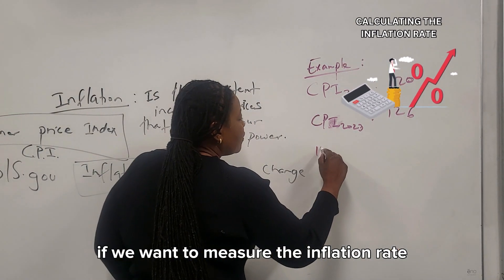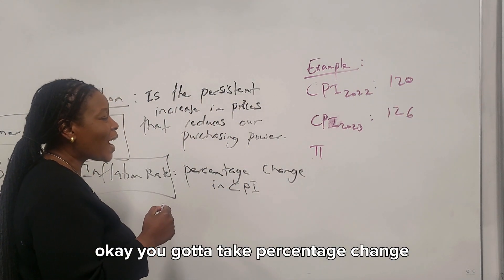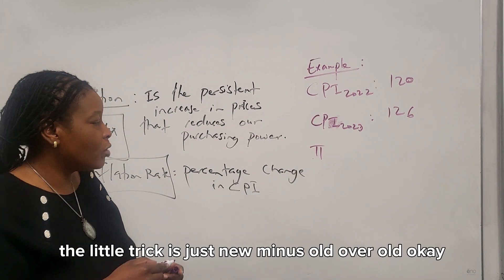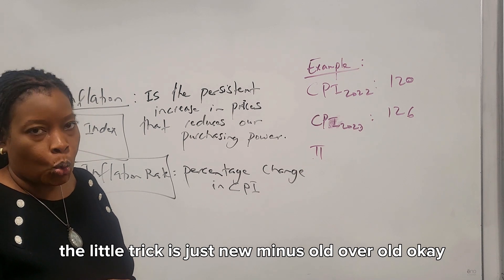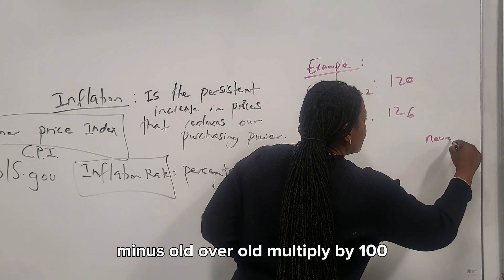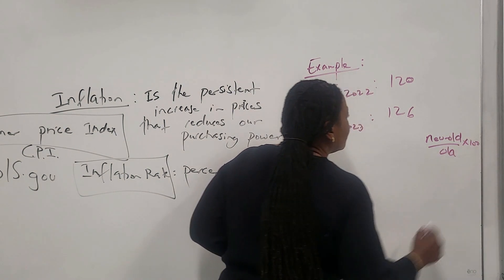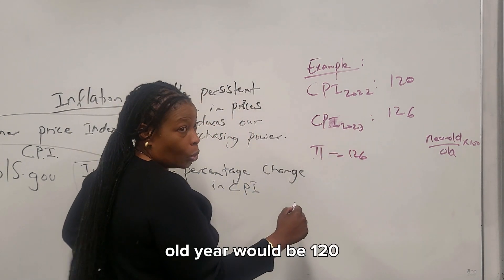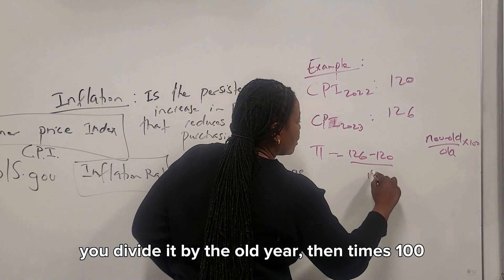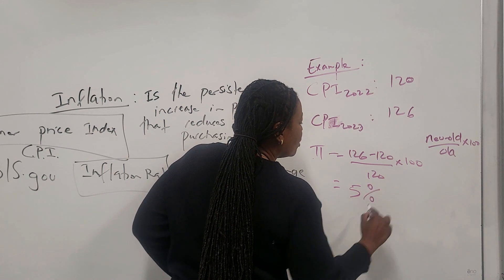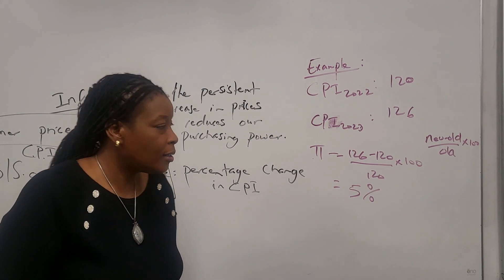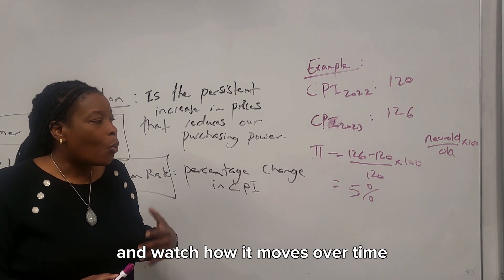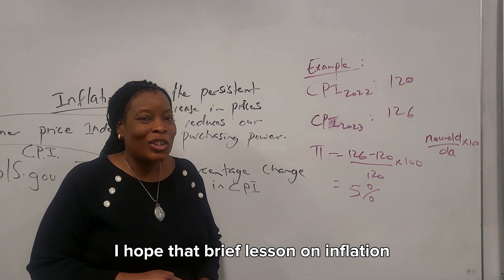To measure the inflation rate, we take the percentage change. The formula is: new minus old, divided by old, times 100. The new year is 2023 with a CPI of 126, and the old year is 2022 with a CPI of 120. So: 126 minus 120, divided by 120, times 100 — the inflation rate in this example would be 5%. That's how inflation works. We take the percentage change in the Consumer Price Index and watch how it moves over time. I hope that brief lesson on inflation was helpful.